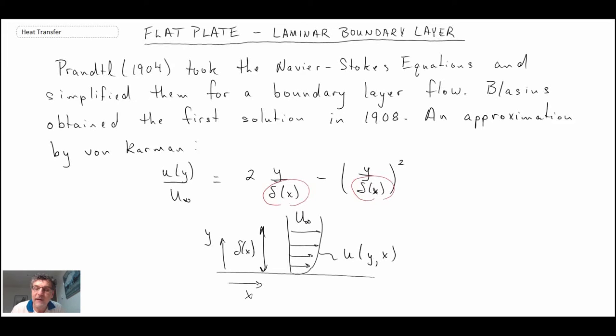That is a velocity profile that von Karman came up with. Now, with Blasius, he was able to, using his numerical integration, come up with a value for delta of X. Let's take a look at what that value was obtained as being. And he got delta of X, the boundary layer thickness, was 5.0X divided by Reynolds number of X to the one-half. And so this was Blasius's solution.